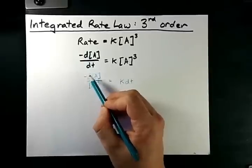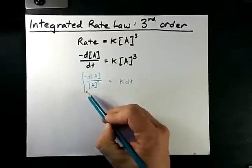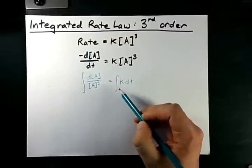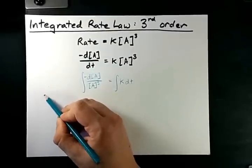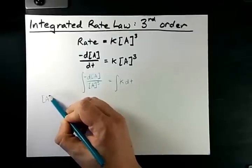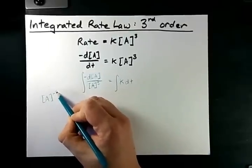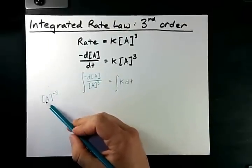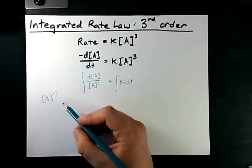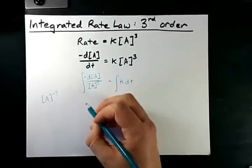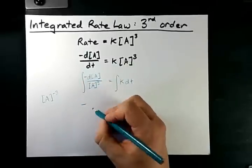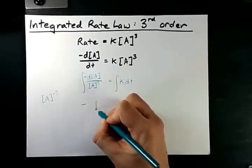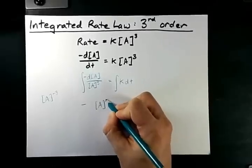And then I actually have to physically integrate both sides. Now, the question is, what is the integral of [A] to the negative 3? And because this is just a concentration with a power, it's actually pretty easy. The negative can come outside of the integral.